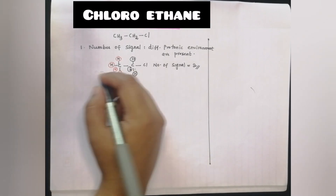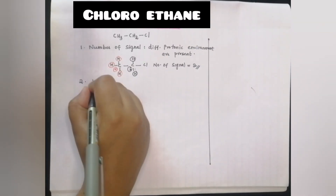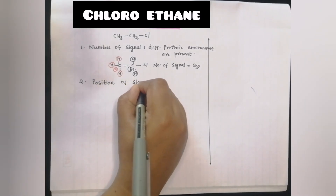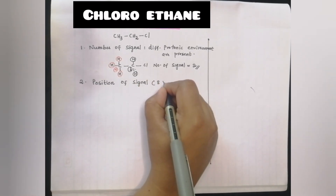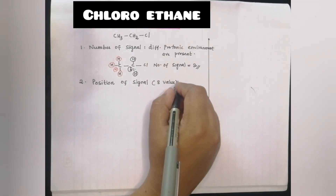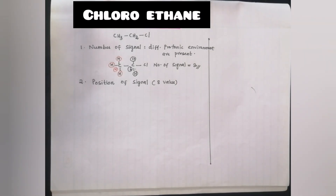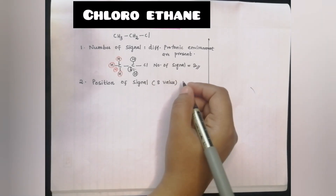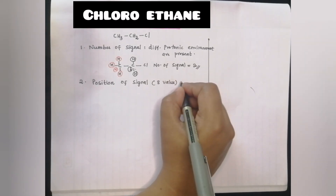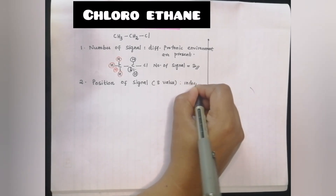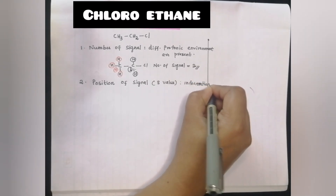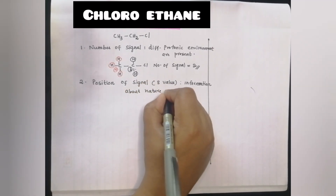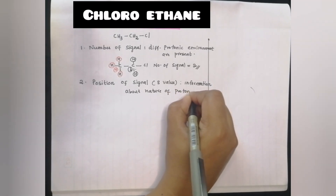The next step is the position of signal. The position of signal is the delta value. That is, how many protons are different — we discuss the nature of the proton environment. It gives information about the nature of the proton environment.